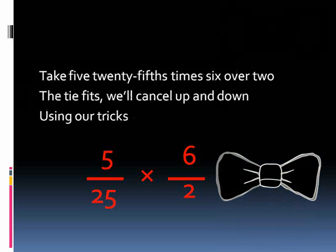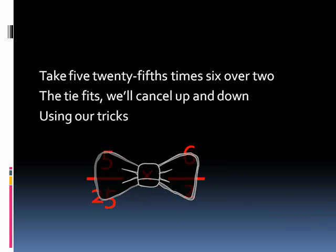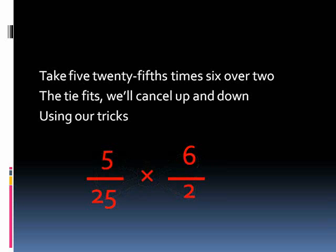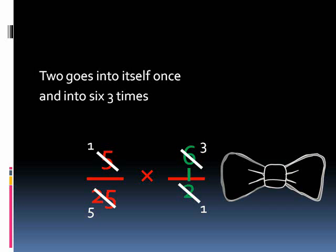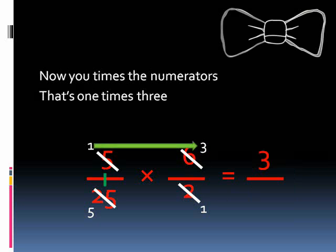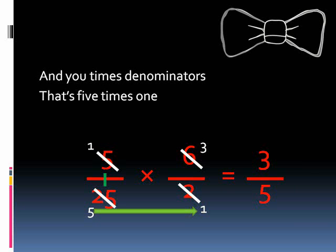Take 5 over 20 times 6 over 2. The tie fits your pants — up and down, use it and it clicks. 5 goes into itself once, and into 25 five times. 5 goes into itself once, and into 6 three times. Now you times the numerators, that's 1 times 3, and you times the denominators, that's 5 times 1.